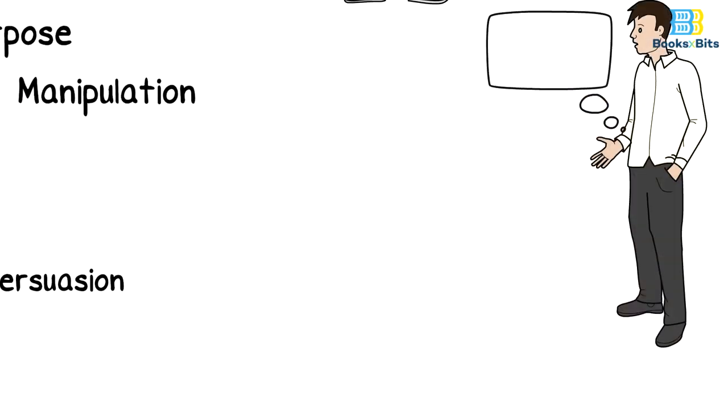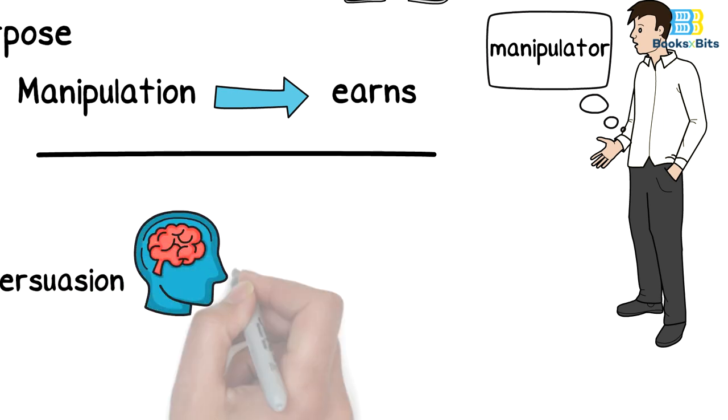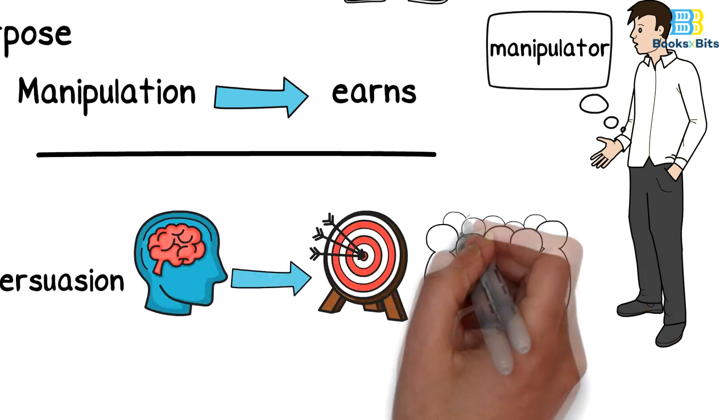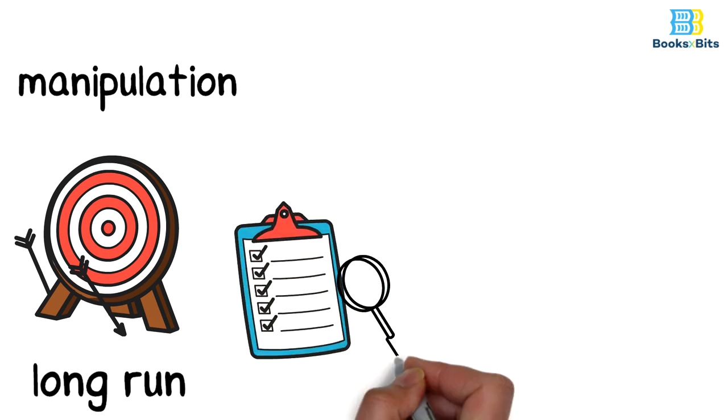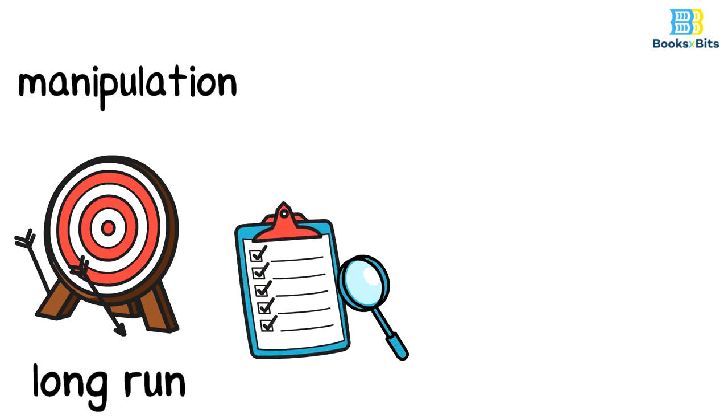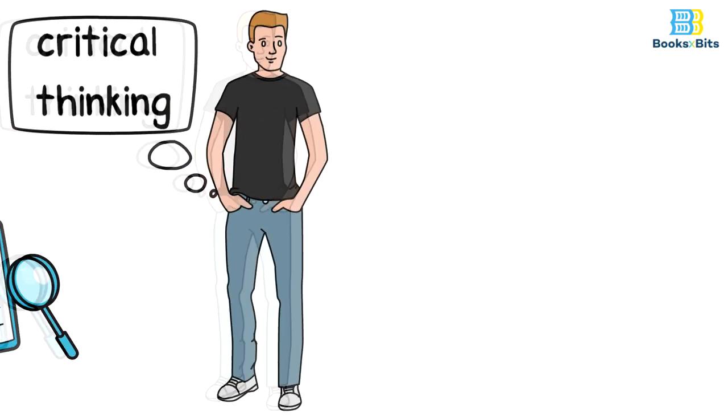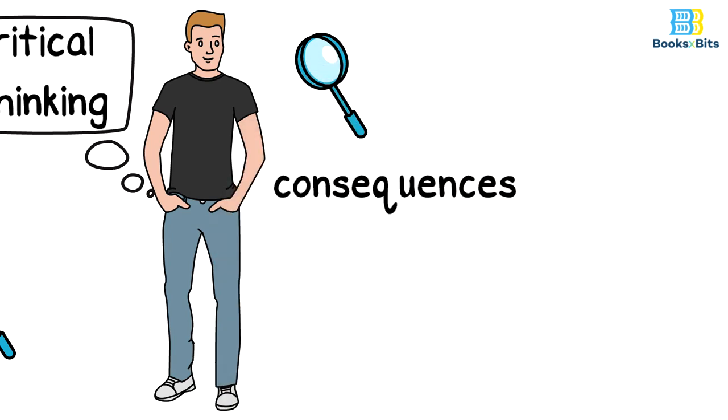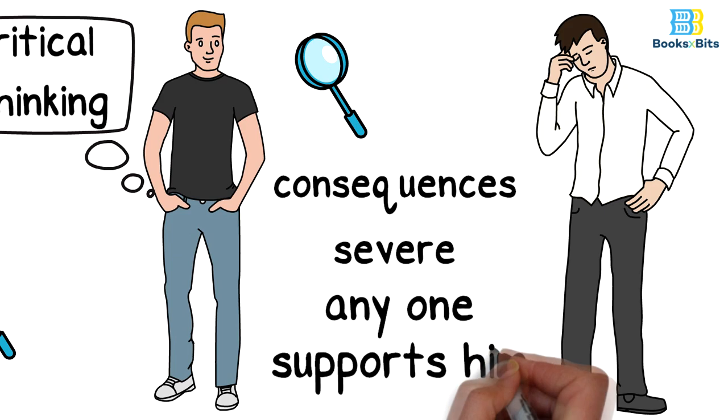Manipulation focuses on what the manipulator earns, while persuasion is concerned with achieving common goals that meet the needs of all sides. Perhaps what is interesting about all this process is that manipulation does not succeed in the long run, as all its results are short-term results. Because all the conditions created by the manipulator are revealed when a person uses his critical thinking. And when it is revealed, the consequences will be severe whether for the manipulator or for anyone who supports him.